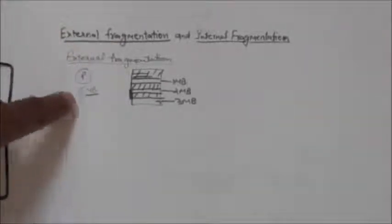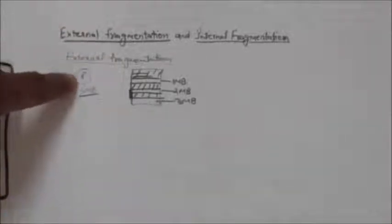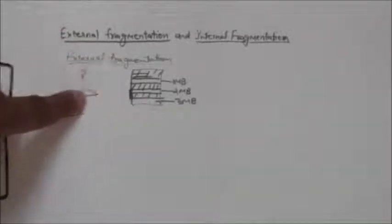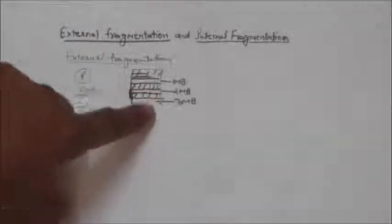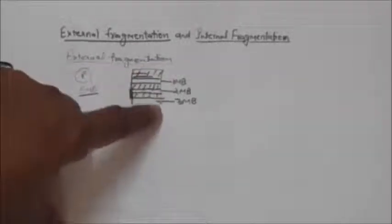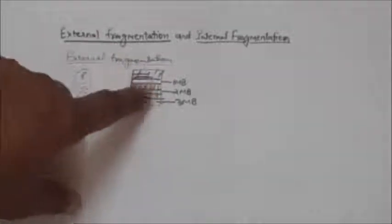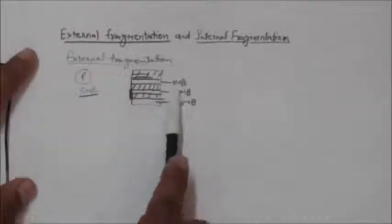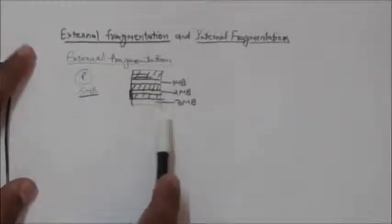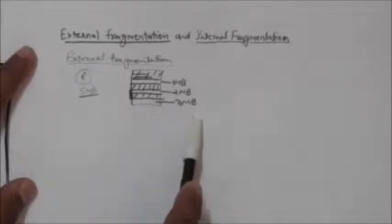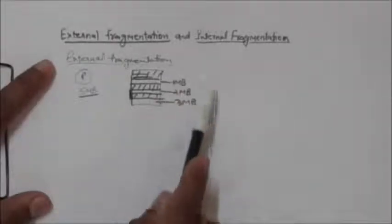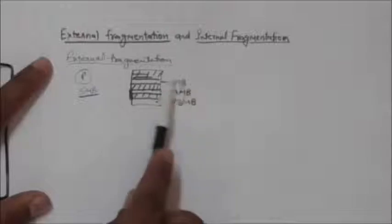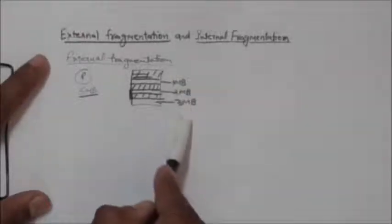Process P requires 5 contiguous segments of memory, but in main memory the free memory is scattered — it is not available as a single hole. One hole is of 1 MB, another hole is of 2 MB, another hole is of 3 MB. Together they can satisfy the requirement of process P, but since the memory is scattered it cannot satisfy the requirement.